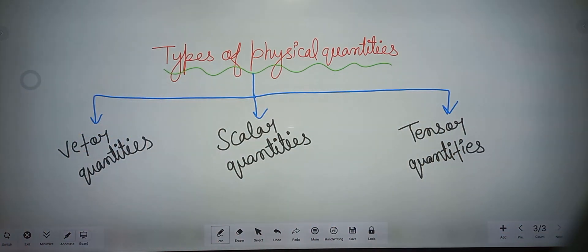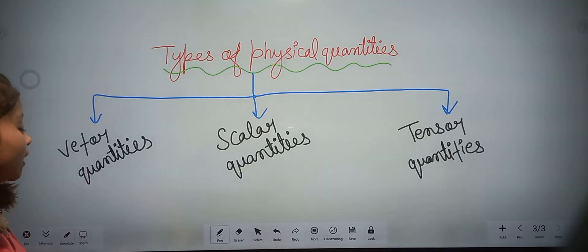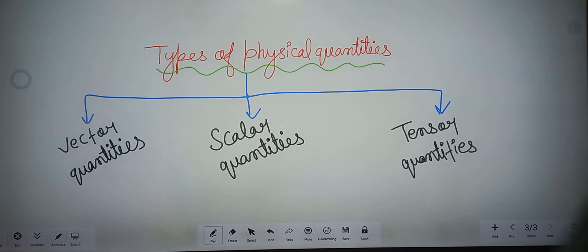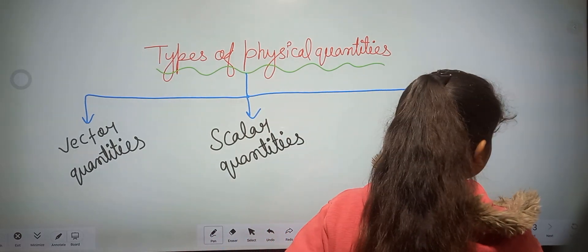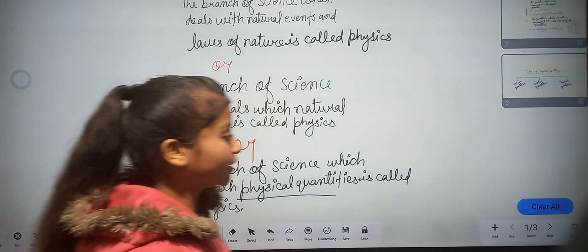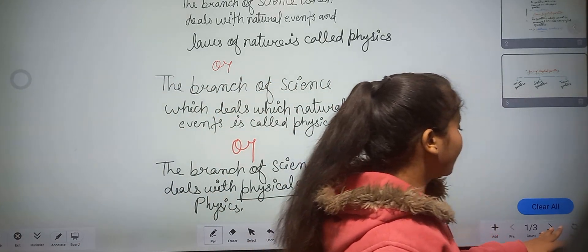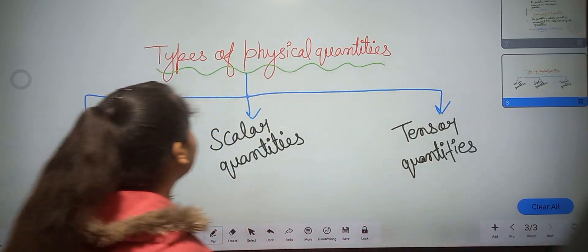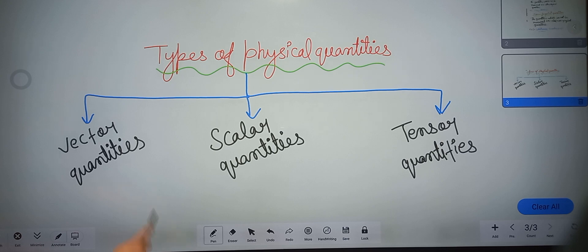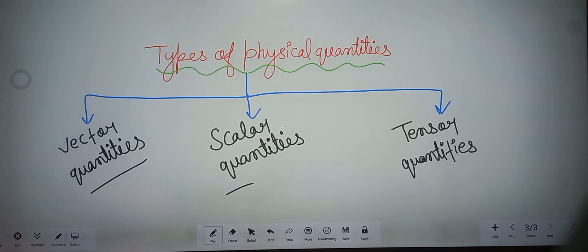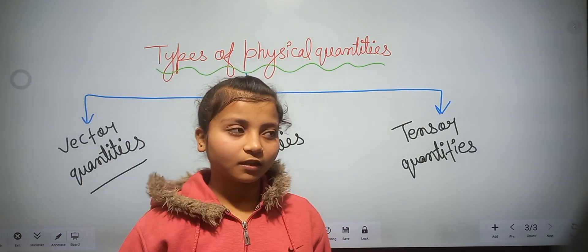Physical quantities are divided into three parts: vector quantities, scalar quantities, and tensor quantities. In this video we discussed what physics is, what physical quantities and non-physical quantities are, and the types of physical quantities. In the next video we will discuss vector quantity, then scalar, and then tensor. That's all for today, take care, goodbye.